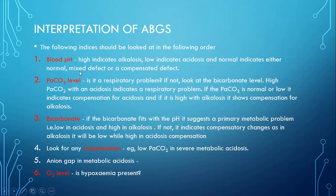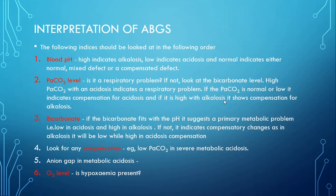Next, we look at the carbon dioxide partial pressure to determine if the problem is respiratory. If CO2 levels are high with acidosis, it indicates a respiratory problem confirming the low pH. If CO2 is normal or low, it indicates compensation for acidosis. If CO2 levels are high with acidosis, it shows compensation is occurring for that acidosis.